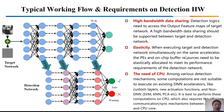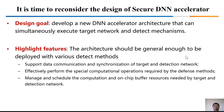From this typical working flow, we can summarize three major requirements on the hardware design. First, we need high-bandwidth data sharing. Second, we need elastic hardware resource management. And last, we need a CPU to run the non-DNN functions. So motivated by this analysis, it's time for us to reconsider the design of secure DNN accelerators.